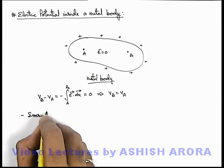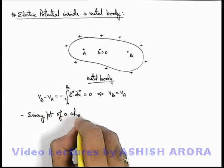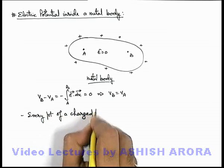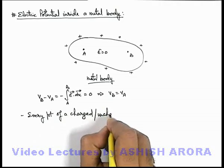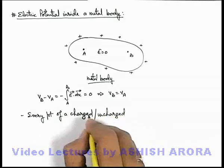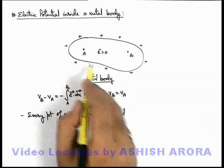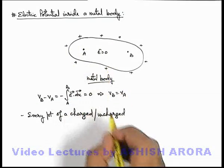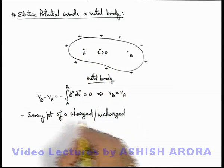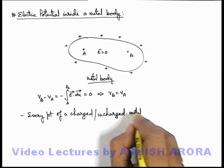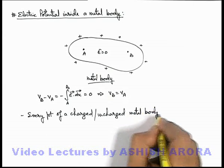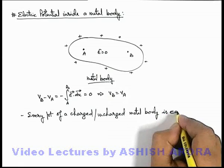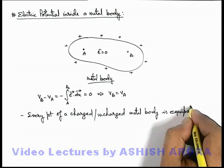Every point of a charged metal body—charged or even uncharged, because even in case of an uncharged metal body, even if some charges are induced on it, at every interior point electric field is always zero—charged or uncharged metal body is equipotential.